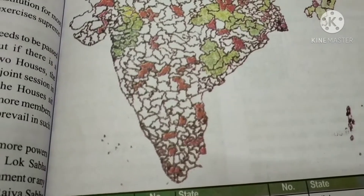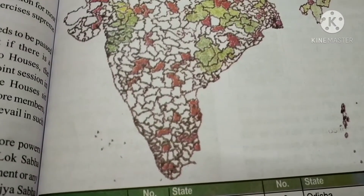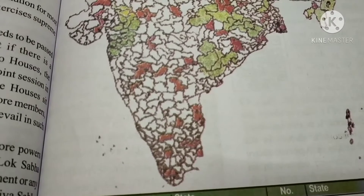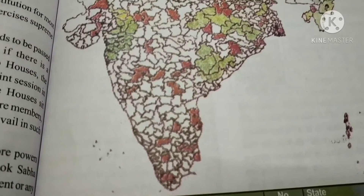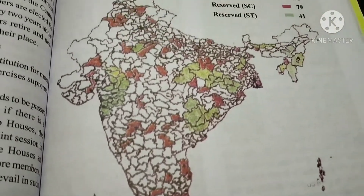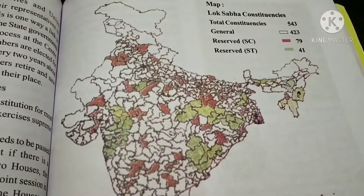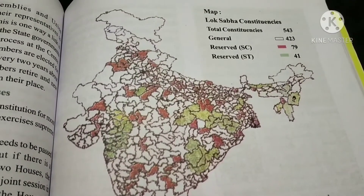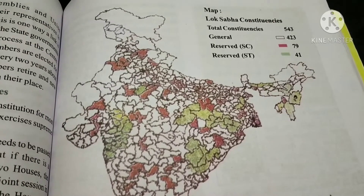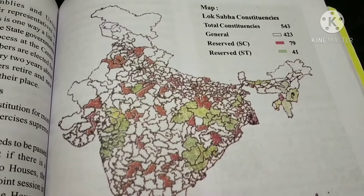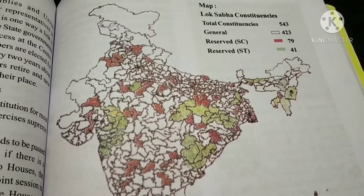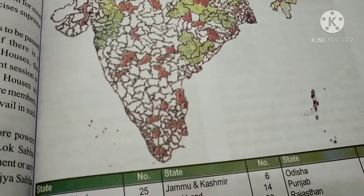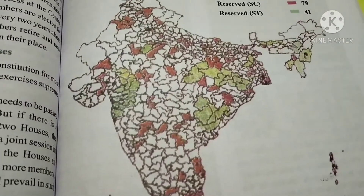The members of Lok Sabha are directly elected by the people, while the Rajya Sabha members are elected by the members of state legislatures. In Lok Sabha, total constituencies are 543 — general 423, reserved for SCs 79, and reserved for STs 41. These are the reservations from different states.